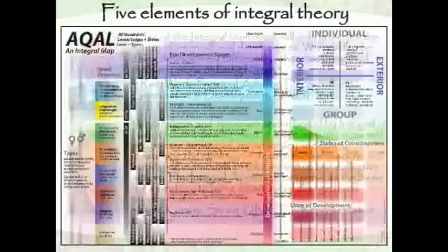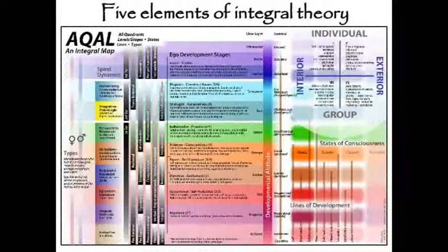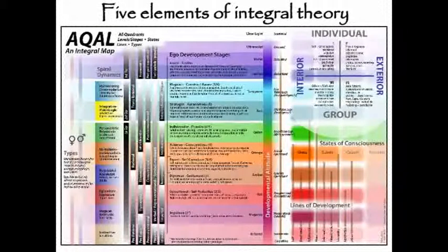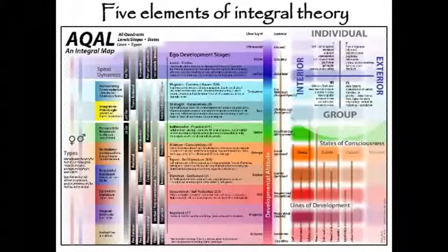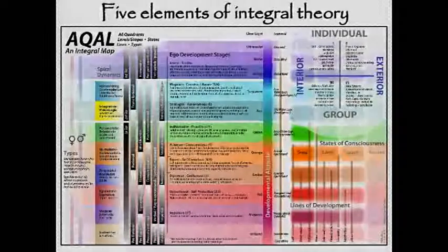There are five elements of integral theory. We're not going to go through all of them in this course. We're going to focus on quadrants — essentially four different ways of seeing reality, four different ways that reality is arising in front of us. We'll also talk about developmental levels, which are the action logics and ego development stages, related to different developmental lines such as values, cognition, or action logics. In the future we'll do work around states and types, which are also very powerful but require more time.